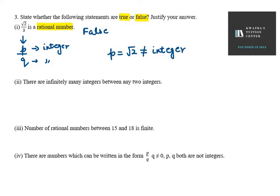Second: there are infinitely many integers between any two integers. So this is false. This is actually true for rational numbers, not for integers. In the case of integers, for example, if I give you 2 integers — 3 and 4 — there is no integer in between them; you cannot have many integers between consecutive integers.